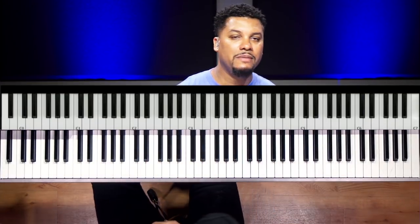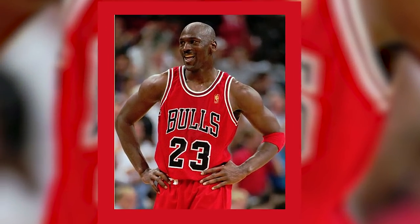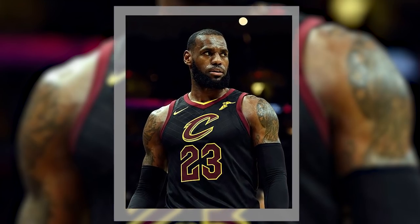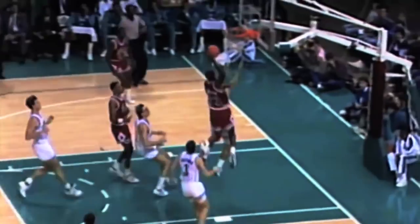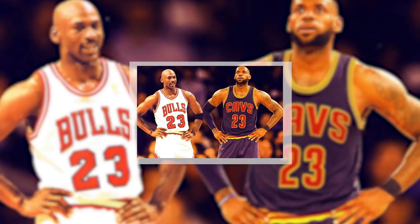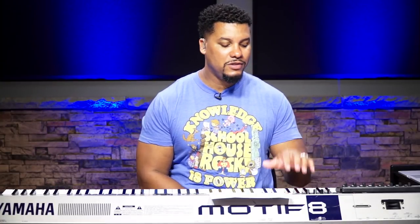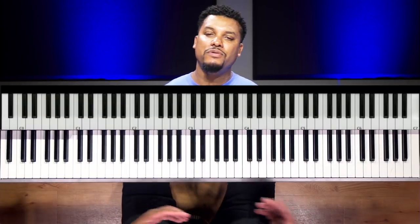If you want to remember this, think about one of the greatest basketball players of all time — Michael Jordan, number 23. Two sets of black keys, three sets of black keys. That's your mnemonic: twenty-three. Two sets of black keys, three sets of black keys.